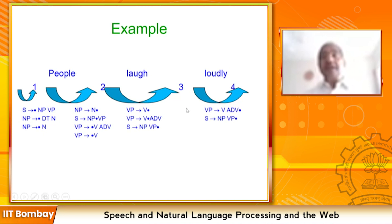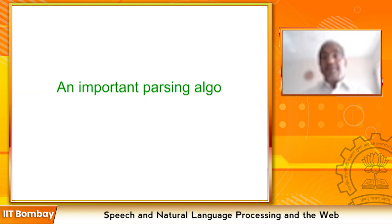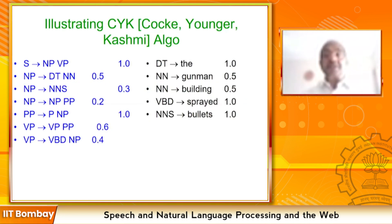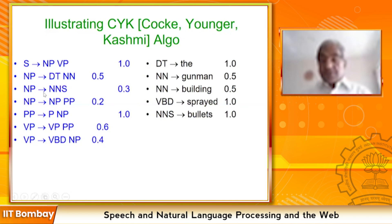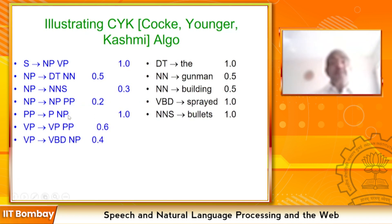Top-down bottom-up chart parsing has been widely and heavily used in natural language parsing. The question arises: are there better algorithms? It turns out there is — the CYK algorithm, the Cocke-Younger-Kasami algorithm. The grammar used to illustrate it has probability values which will be relevant for probabilistic parsing. The rules include: S goes to NP VP, VP goes to NP, NP goes to determiner and noun, NP goes to NP and PP, PP goes to preposition and NP, VP goes to VBD NP — this grammar captures only a part of English.